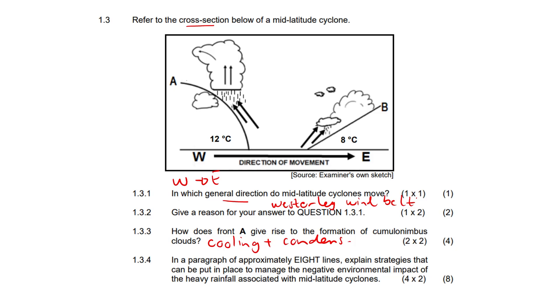Now a proper question here. In a paragraph of approximately eight lines, explain strategies that can be put in place to manage the negative environmental impact of the heavy rainfall associated with mid-latitude cyclones. It's going to be four times two, so just give four proper points, well explained.